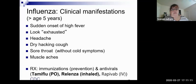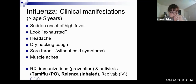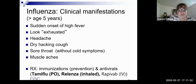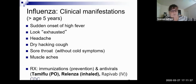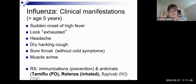Influenza — onset of high fever, the child looks tired and headachy, dry hacking cough, sore throat, muscle aches. We can use Tamiflu, which has to be given within 48 hours of onset of symptoms. Sometimes that's difficult to determine, or the child has already had three to five days of symptoms. Tamiflu doesn't prevent the flu but can help decrease the severity of symptoms.